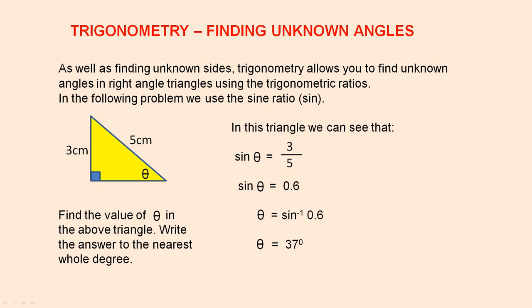In the following problem we use the sine ratio, and that's sine, S-I-N for short. You can see here we're asked to find this angle. We've been given the opposite and the hypotenuse so that's why we use sine. Now we want the answer to the nearest whole degree.